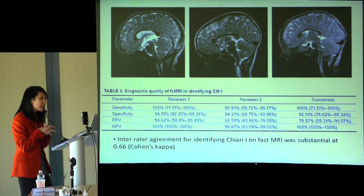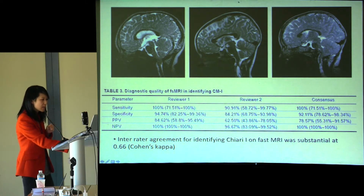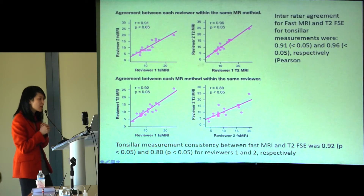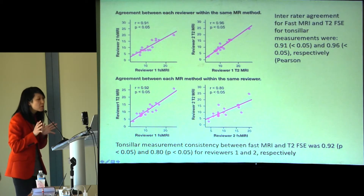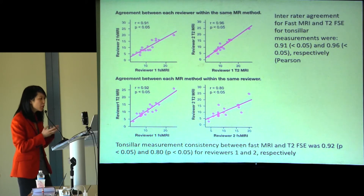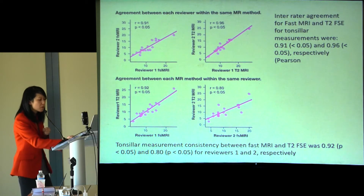Overall, reviewers were very good at identifying low-lying tonsils on fast scan, with pretty good inter-rater agreement. You can see examples of fast scan images — you actually get a nice anatomic look at that area, and you can even see syrinx in some of these kids. Regarding measurements between fast scan and T2, they were very concordant. Measurements were consistent within each reviewer and between the two reviewers, showing good agreement. We ran Pearson correlation coefficients.